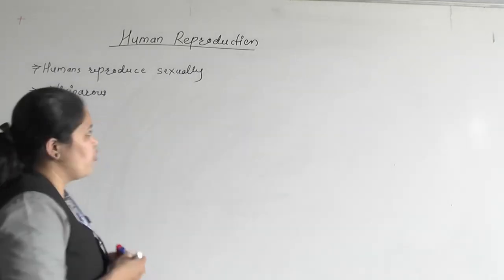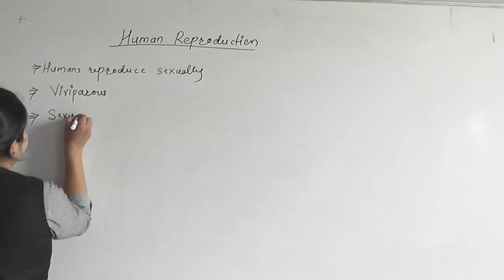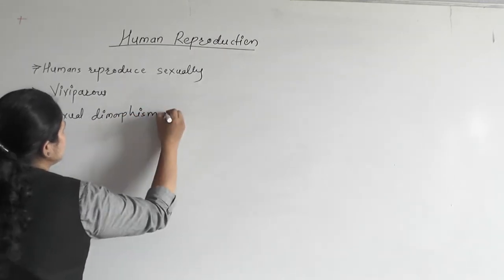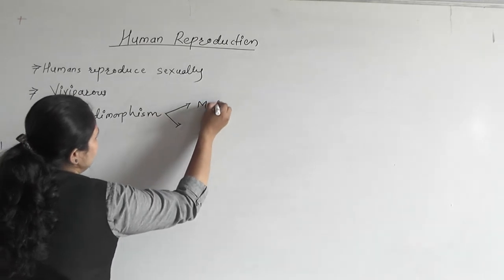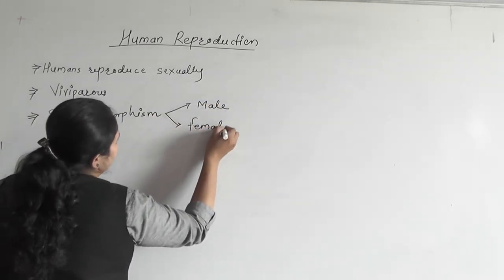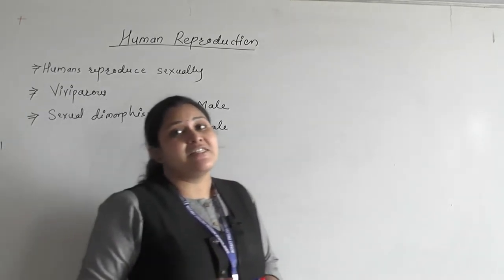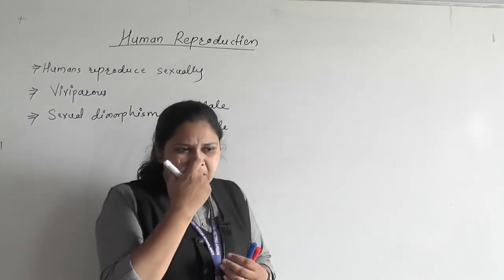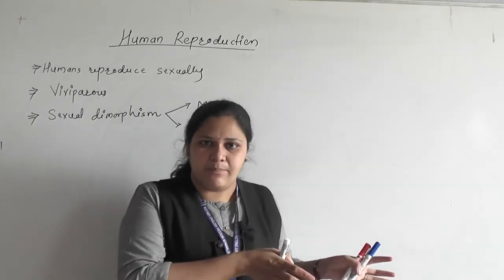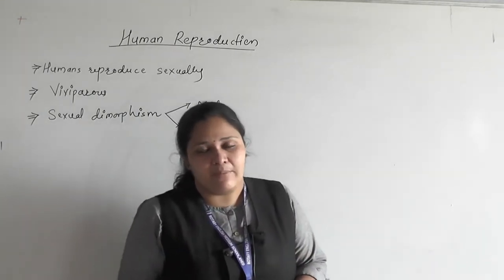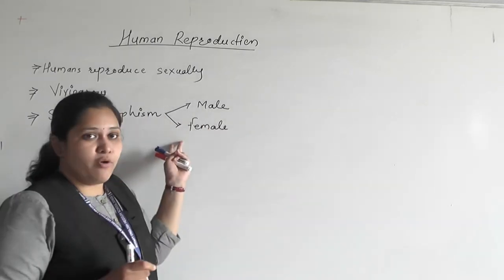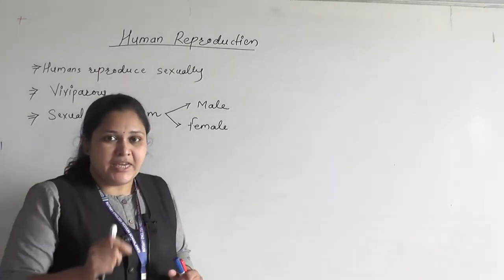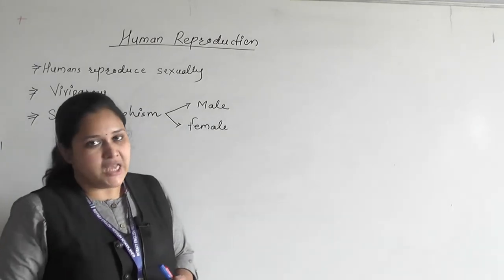Human beings show sexual dimorphism. Sexual dimorphism means there are different sexes — male and female — in which special types of reproductive cells are produced. We are unisexual organisms. Male sex organs are developed in the male body, female sex organs in the female body. So we show sexual dimorphism; male and female individuals are distinguished externally, and in each sex, specific types of reproductive cells are produced.